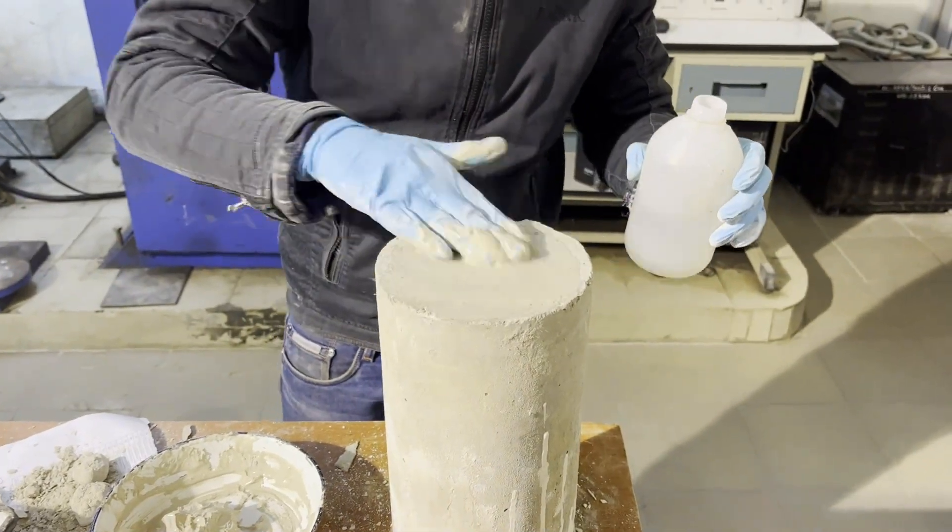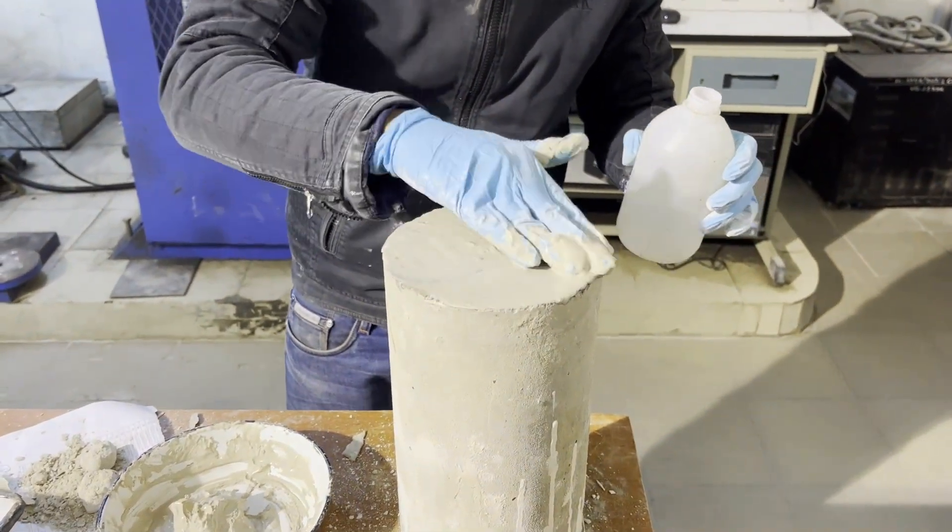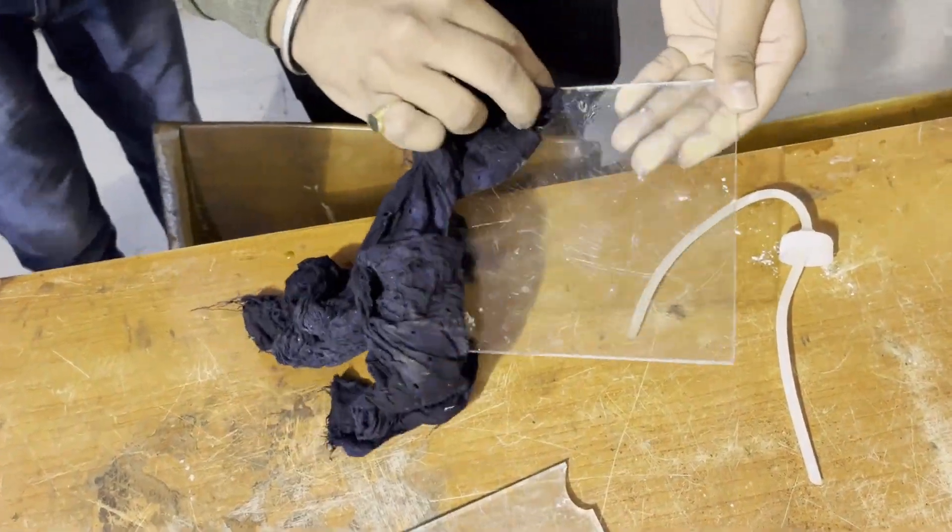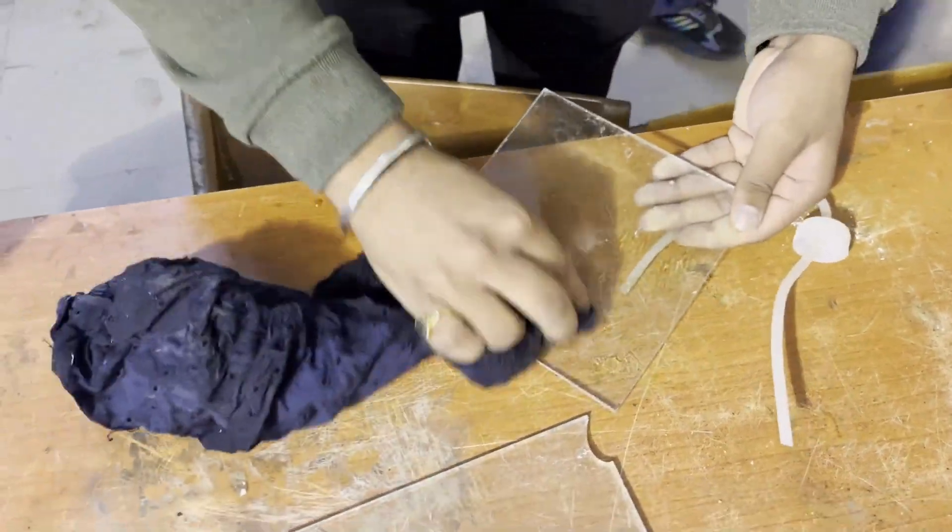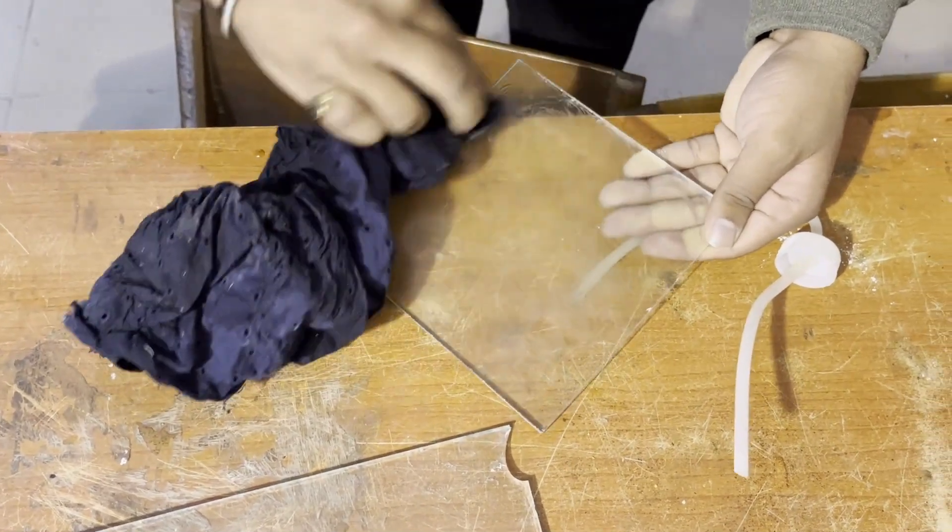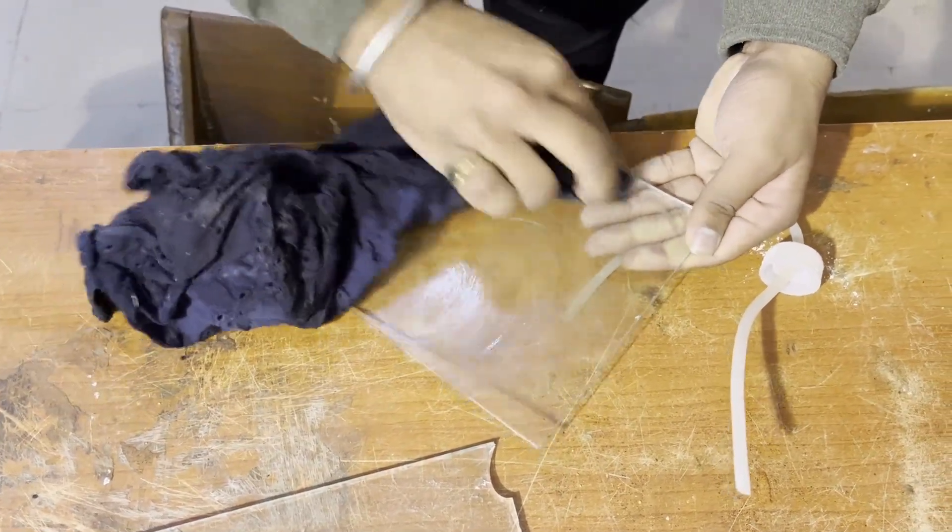Place some amount of gypsum plaster on top of the cylindrical test specimen. Take a glass plate and apply a thin layer of oil or grease on the glass plate to avoid adhesion of the plaster with the glass plate.